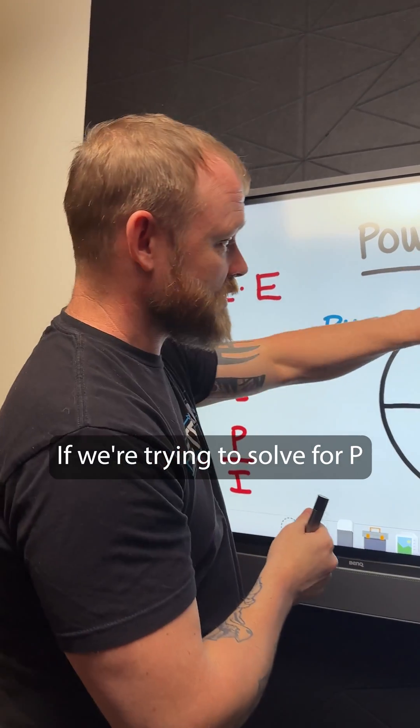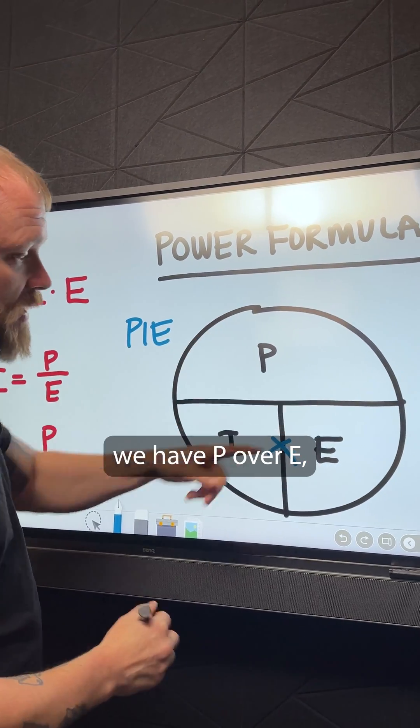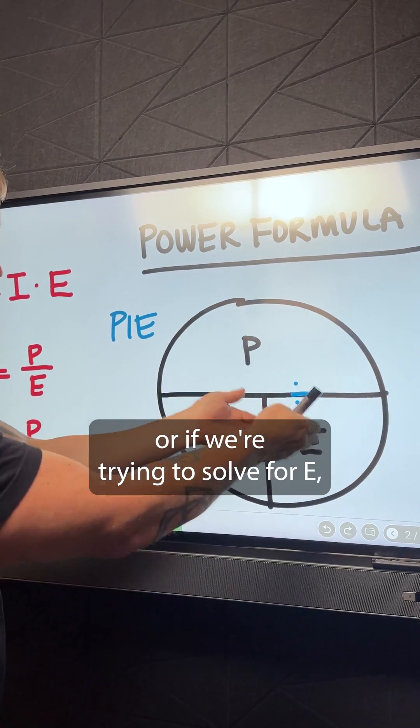So we have these three different formulas. If we're trying to solve for P, we just have I times E. If we're trying to solve for I, we have P over E. Or if we're trying to solve for E, we have P over I.